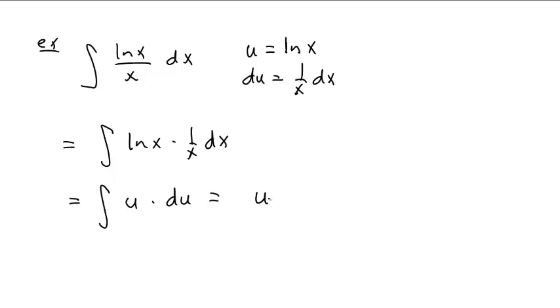And now you say, that's u squared over 2 plus c, which is, I'll call the over 2, 1 half, 1 half of what's u squared, the natural log of x squared plus c.